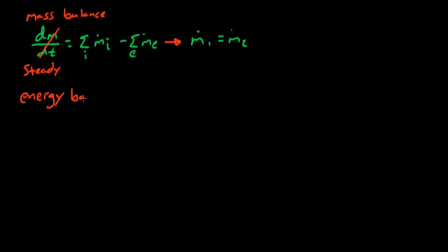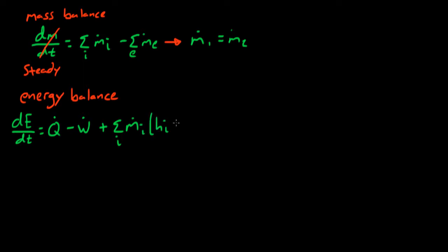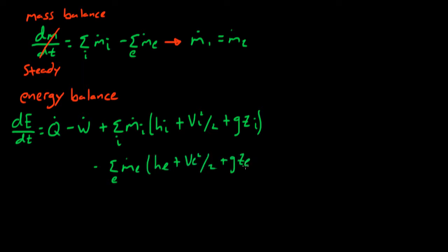Next, we write the energy balance. The flow is steady, has no heat transfer, and no work. We can divide out the mass flows because the mass flow at station 1 is equal to the mass flow at station 2.